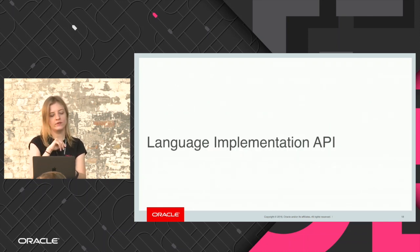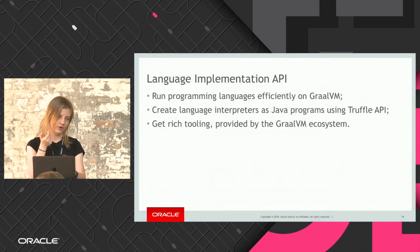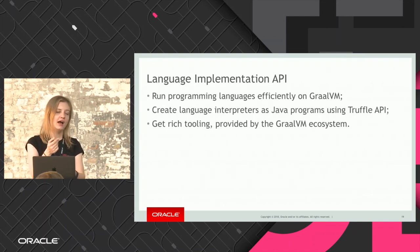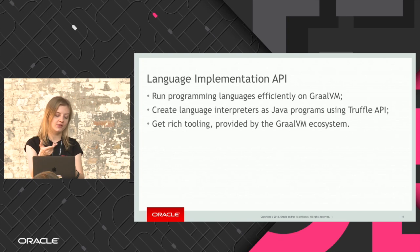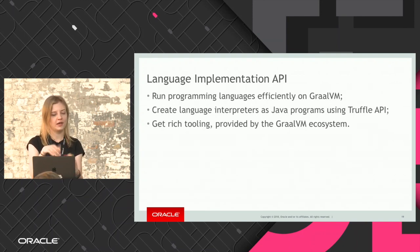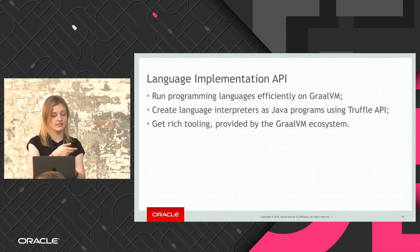Another thing I want to mention is our language implementation API — that's the way we bring new languages to the platform. If you want to bring your particular language to GraalVM, what you need to do is write an interpreter in Java, and then you will get access to the platform and be able to run your language on it. We have a manual on what you need to do, and if you're interested, give it a try.